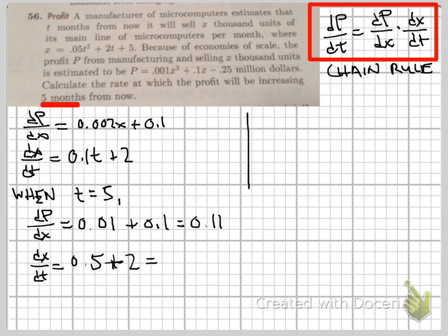And so the answer that we're looking for—we're going to take this expression in the red box. We're going to say dp/dt is going to equal dp/dx, which we just found is 0.11 when t equals five, times 2.5, which is dx/dt at the given time. And it's going to be 0.275.